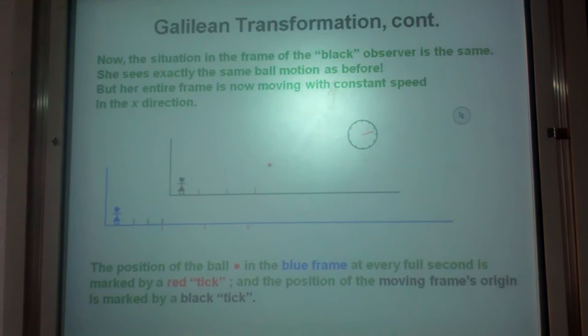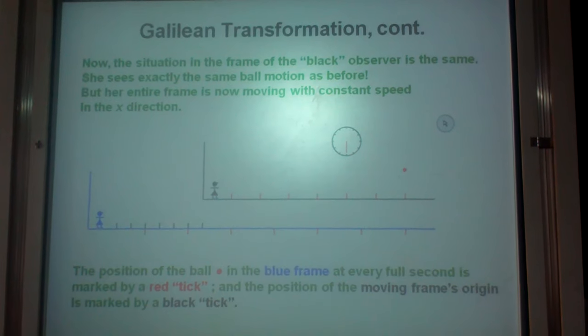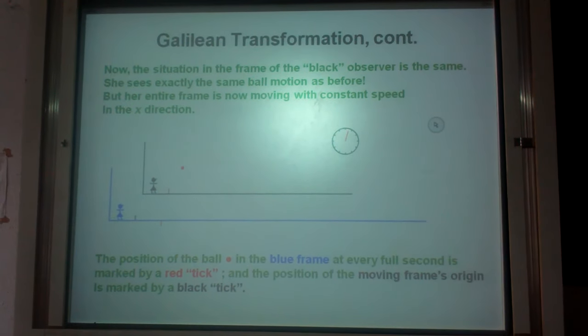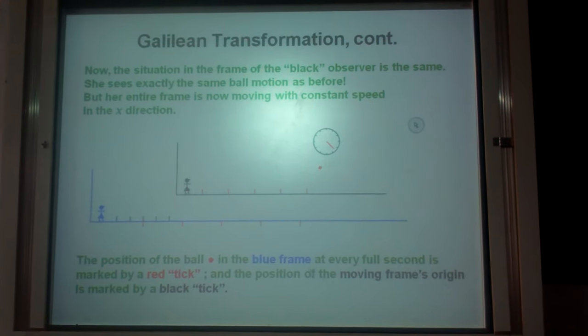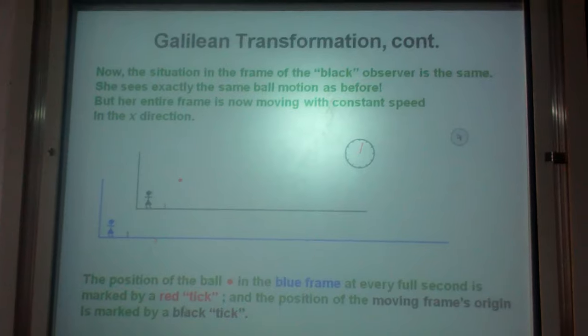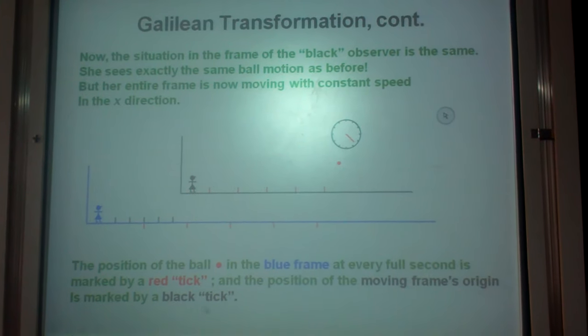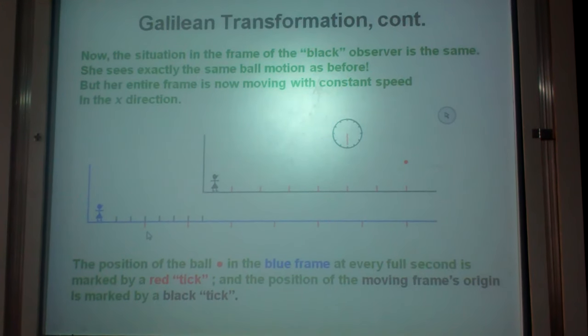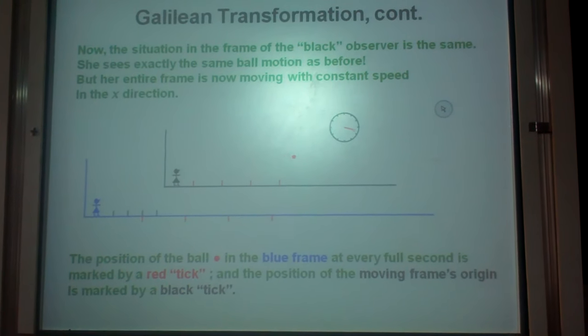Let us observe the motion only in one direction for the present. The frame has Y and Z axis also, but the present is moving only in the X direction. The position of the ball dot in the blue frame at every full second is marked by a red tick. And the position of the moving frame's origin is marked by a black tick. At some points they are coinciding, at some points they are not. Let us observe.